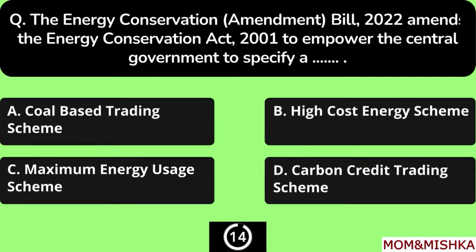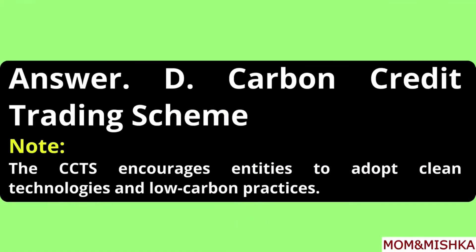The Energy Conservation Amendment Bill 2022 amends the Energy Conservation Act 2001 to empower the central government to specify a Carbon Credit Trading Scheme, Option D. This scheme encourages entities to adopt clean technologies and low-carbon practices.